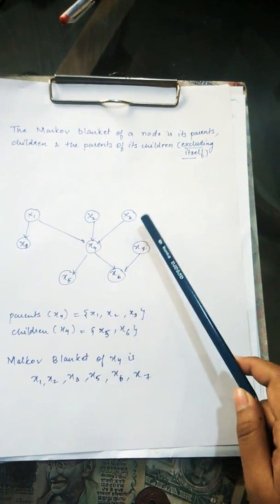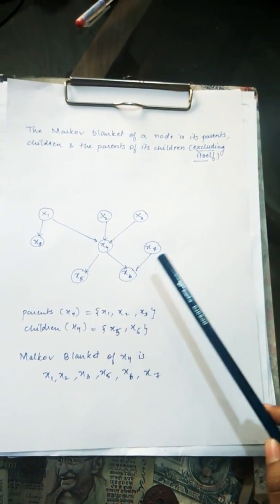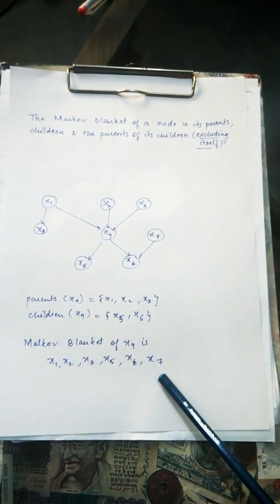So now we have X1, X2, X3, X5, X6, and X7. That is what I have written here.